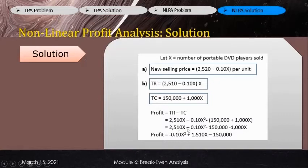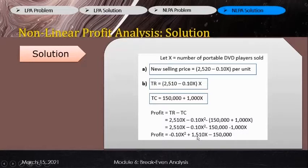Profit equals total revenue minus total cost: (2,510X minus 0.10X squared) minus (150,000 plus 1,000X). Expanding: 2,510X minus 0.10X squared minus 150,000 minus 1,000X. The subtraction makes the terms negative because negative times positive equals negative. Arranging by variable: negative 0.10X squared plus (2,510X minus 1,000X) minus 150,000 gives negative 0.10X squared plus 1,510X minus 150,000. This profit equation will be used later.